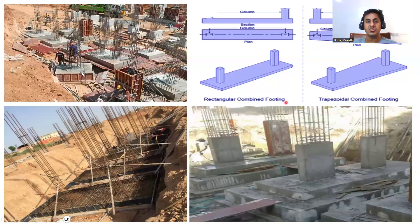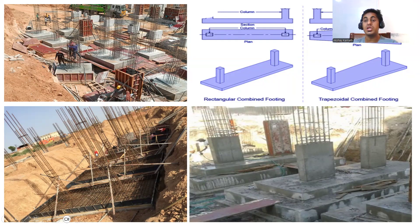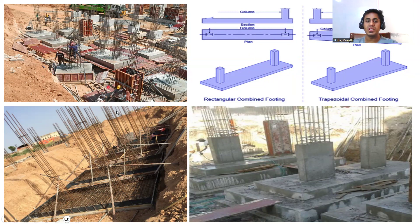Apart from isolated footing, we have combined footing. This particular footing with two columns is called a combined footing. You provide a combined footing when two isolated footings are merging — when they are very close to each other and would overlap. Instead of providing two isolated footings, you provide one footing and call it a combined footing.